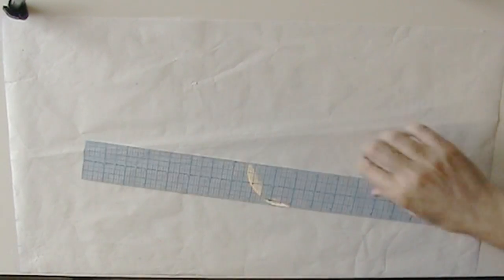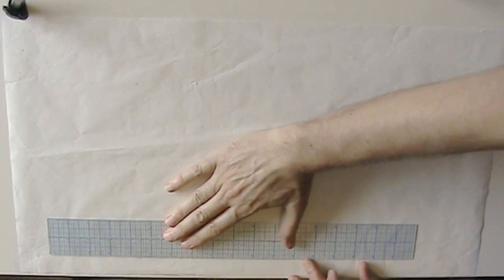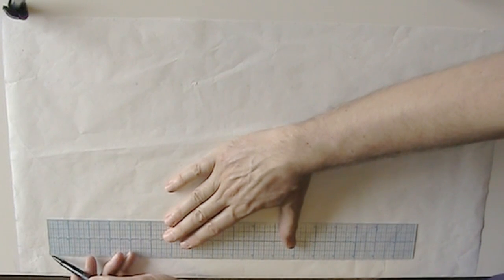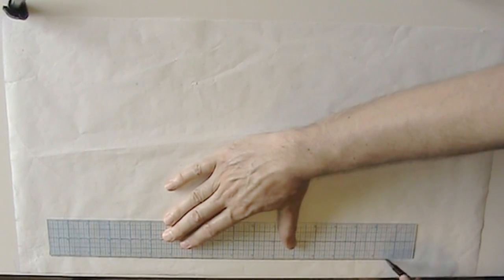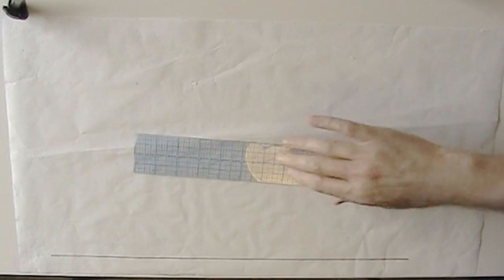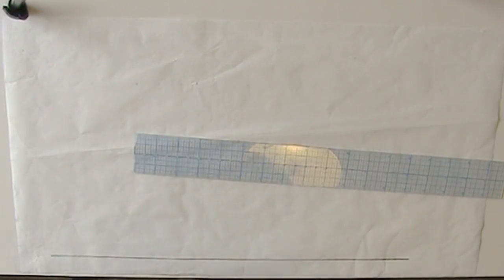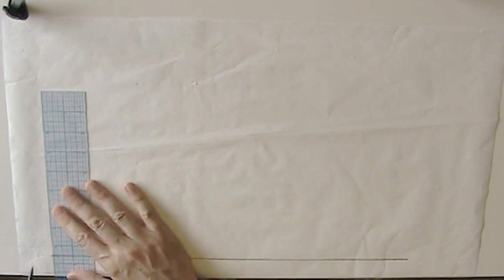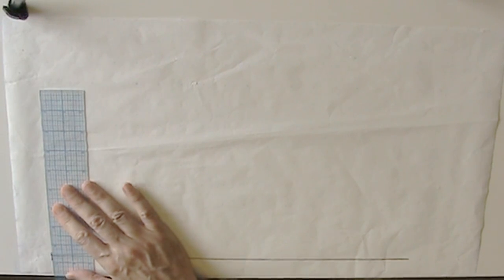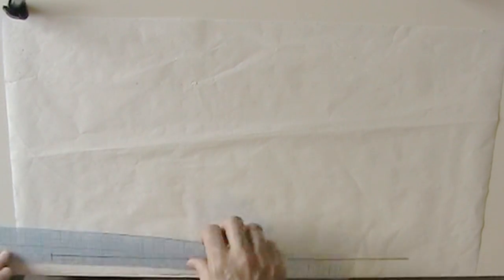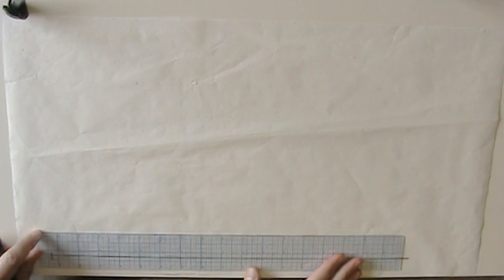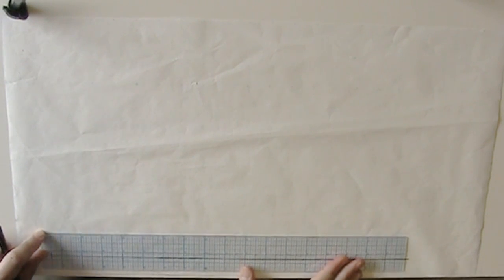Okay. Drafting the front bodice is very similar to drafting the back. Your first step is to draw a line equal to your front high point shoulder to waist measurement, in this case, which was 17 1/2 inches.